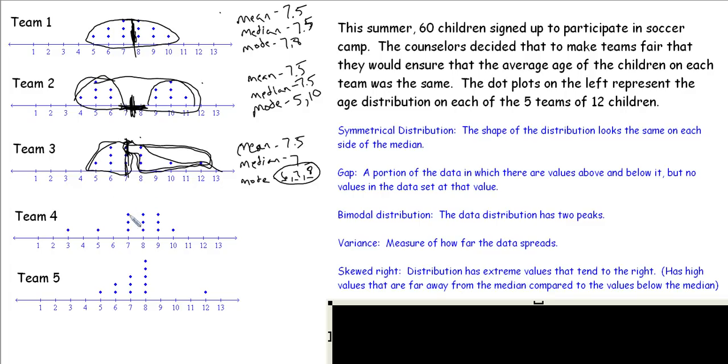Similarly, Team 4 here, we have a skewed situation where the median and, by the way, the mean here again, median is 7.5. Notice the average age of all the teammates is staying the same. We've fulfilled the objective of the camp counselors. The median, however, is now 8. And our mode this time would be 7, 8, and 9.